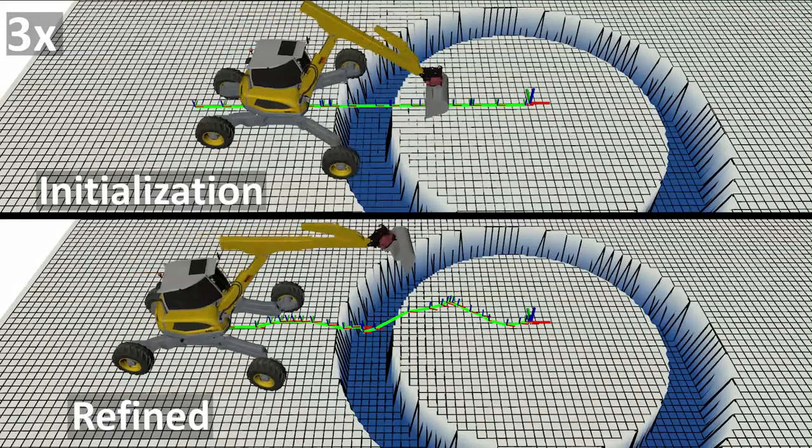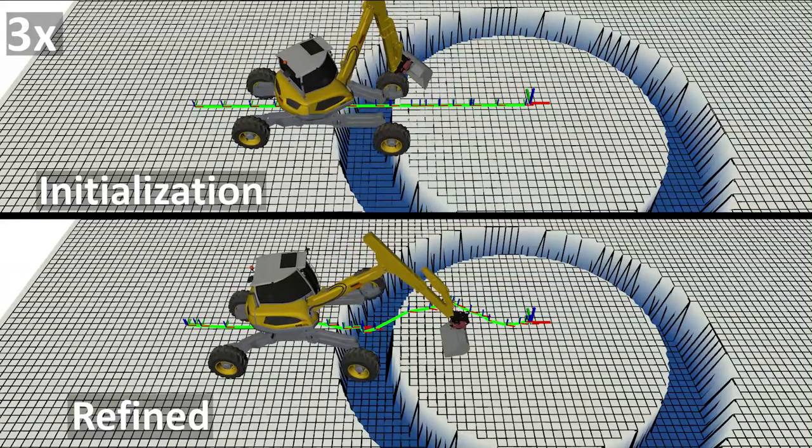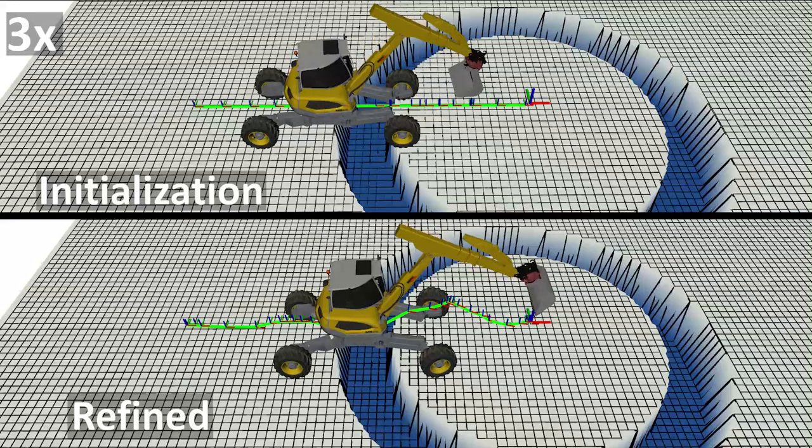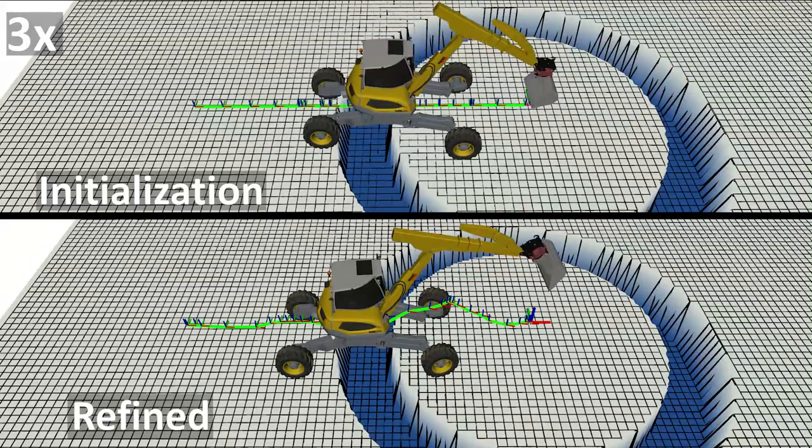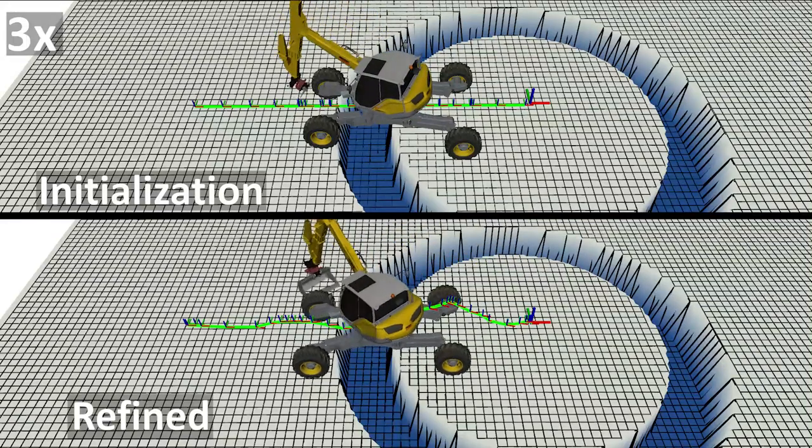The initialization step computes contact schedule and a whole body trajectory that roughly satisfies the system's constraints. For example, the initialization step does not enforce non-holonomic rolling constraints nor does it force the shovel to stay aligned with the terrain.